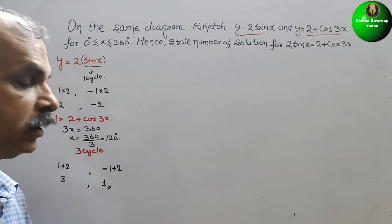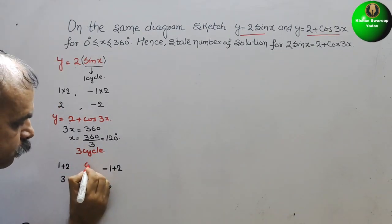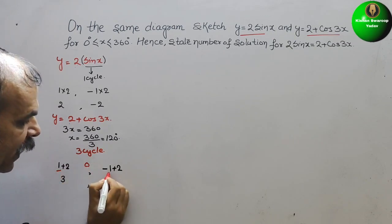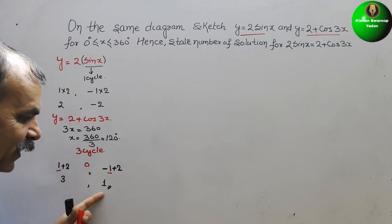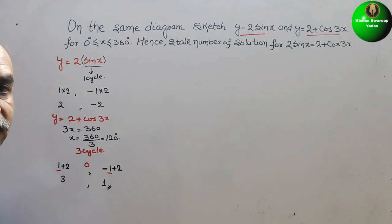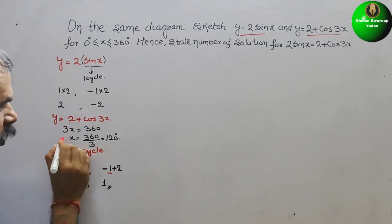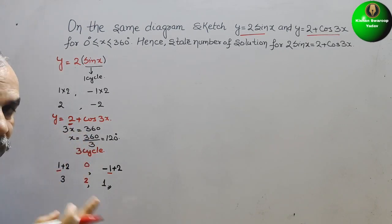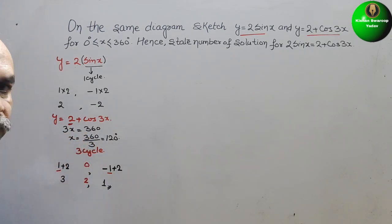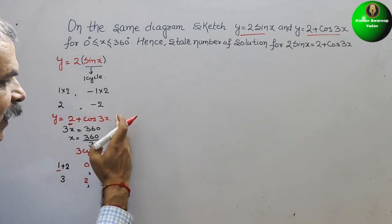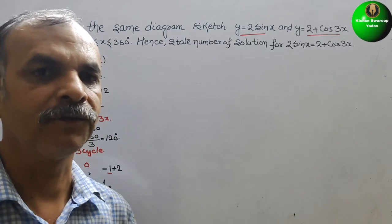The reference line shifts as well. For a normal cosine, the reference (midline) is 0. But here, since we add 2, the reference becomes 2 instead of 0. Using this data, we will now draw the graph.